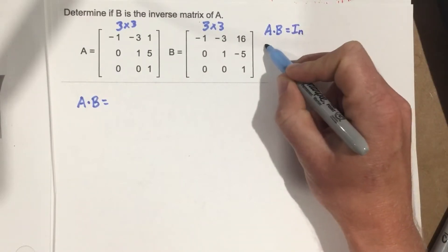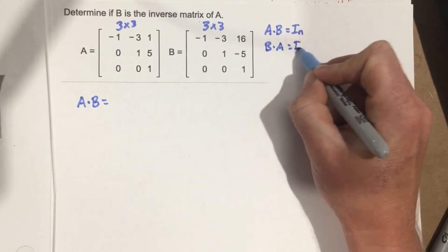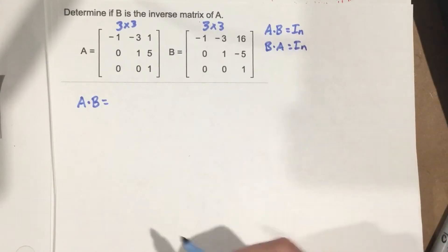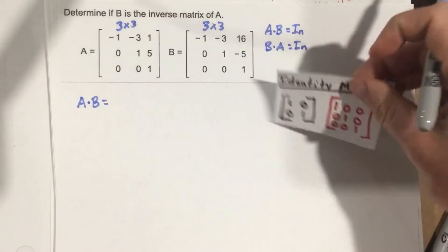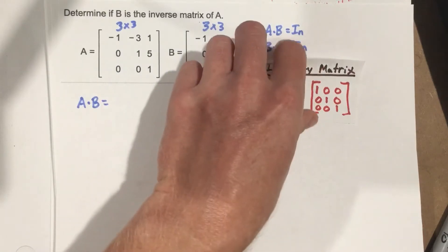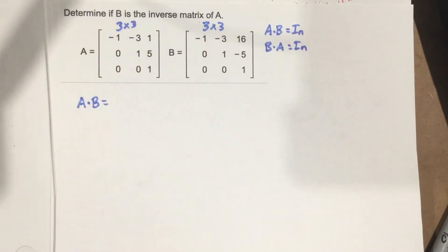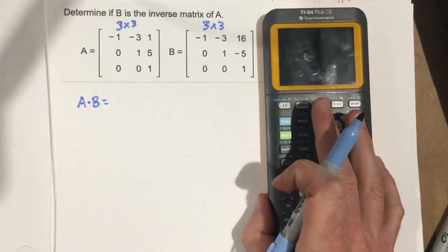We also need B times A to be the identity. So we need to check A times B first to see if we end up with the identity matrix — shown in red here: 1, 0, 0, 0, 1, 0, and 0, 0, 1. Let's start. We're going to do most of this in the calculator because it just makes it easier.